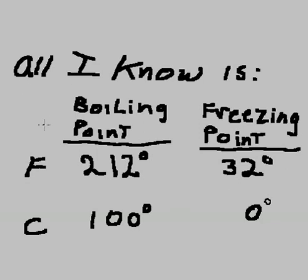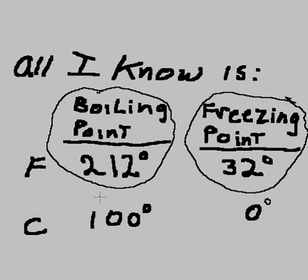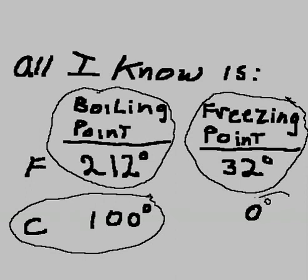All I know is that the boiling point for Fahrenheit is 212 degrees, and the freezing point for Fahrenheit is 32 degrees, and that the boiling point for Celsius is 100 degrees, and the freezing point for Celsius is 0 degrees. That's all I know about these two systems. What can I learn from just these facts?